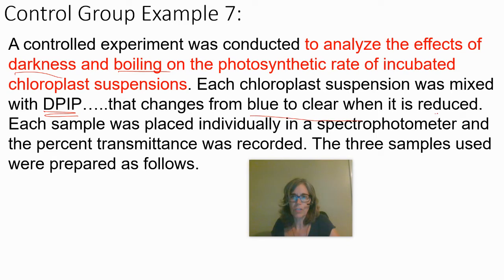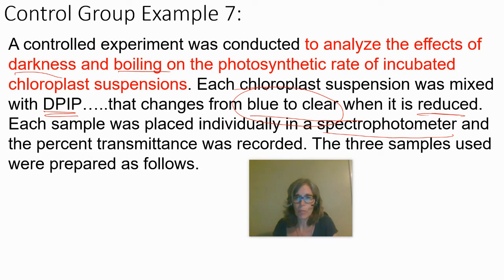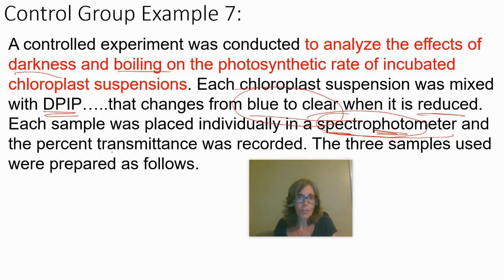Each chloroplast suspension was mixed with DPIP, which changes from blue to clear when it's reduced — so it acts as an indicator. Each sample was placed in a spectrophotometer, which measures how much color is in something, and percent transmittance was recorded.